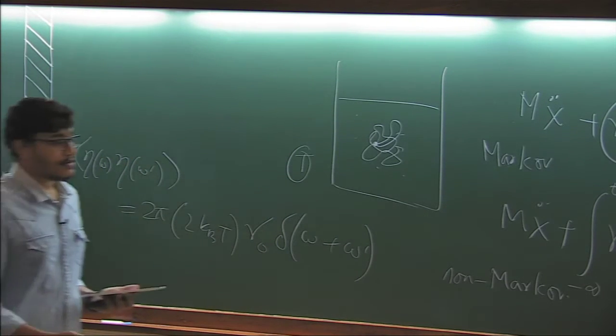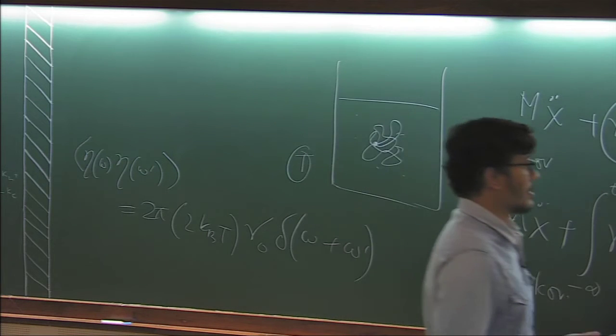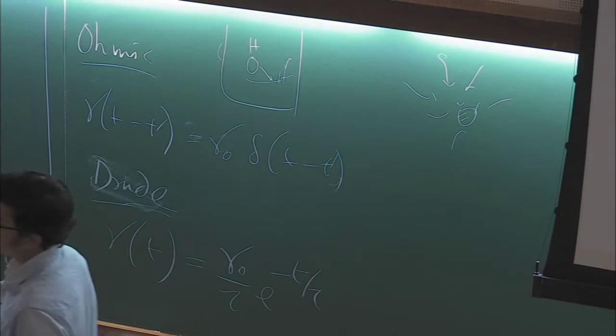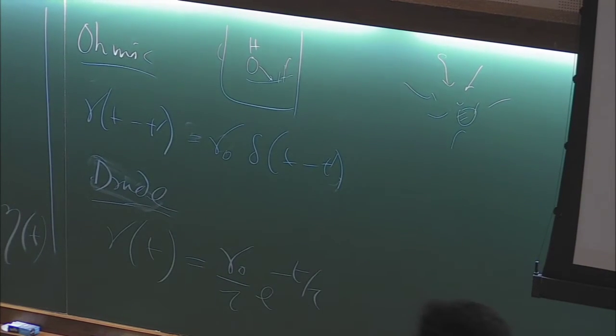So now how to treat, how to introduce quantum mechanics in this system? So one way to do is to do linear response. So this is my system H, and there is some interaction and there is some environment something like that. And if one does that, then the fluctuation dissipation relation changes a little bit. So let me just write.